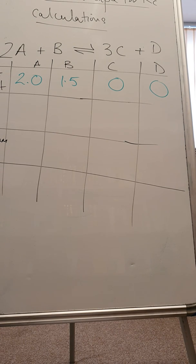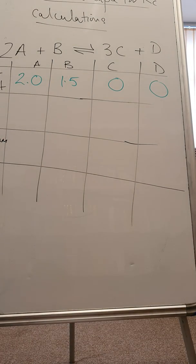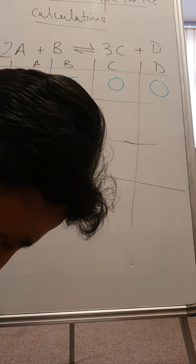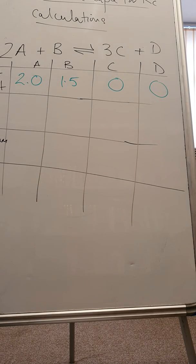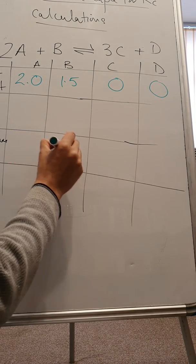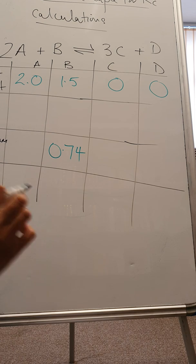Now the question says at equilibrium 0.74 moles of B is formed. So I'm going to go to the equilibrium moles. At equilibrium, 0.74 moles of B remained. That's all the information. I've just taken the information from the question and put that into a table.